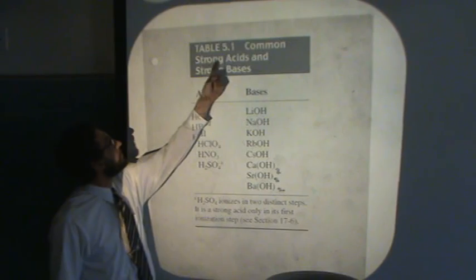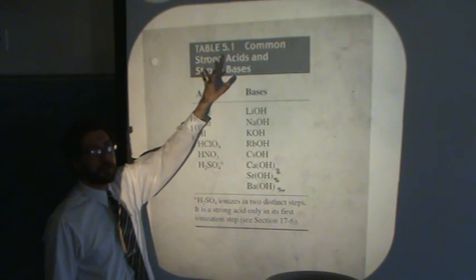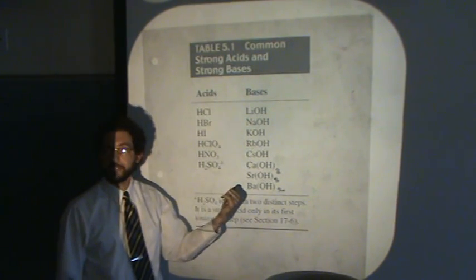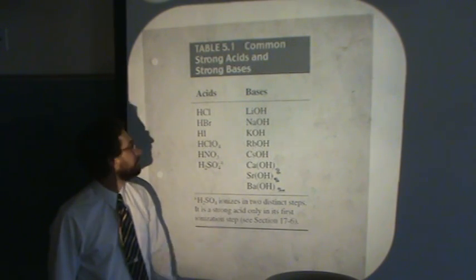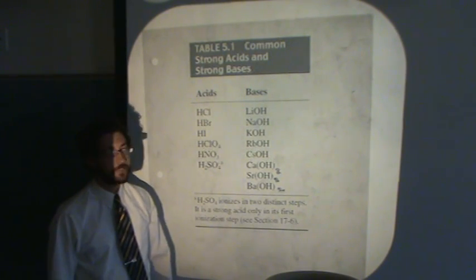See this table? It's table 5-1 in some of the books, 5-2 in some other books. If it's on this table, it's strong. If it's not on this table, it's weak. There we go. I think that took 5 seconds.